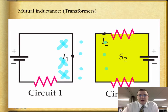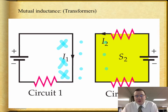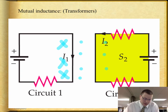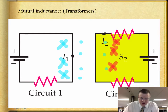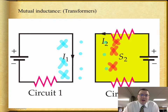As you turn on the circuit, what you can have is a change in flux through circuit two. Circuit two is going to send its own magnetic field back in the opposite direction to try and cancel out the change in flux of circuit one, and it's going to induce currents in the opposite direction.